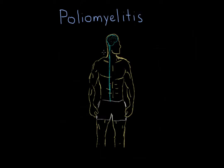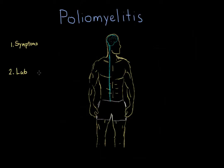Diagnosis of poliomyelitis is really based off of two things. First of all, you're going to want to think about what symptoms the patient is having. The symptoms should paint a clearer picture of polio and get you thinking about it. To confirm the diagnosis, the next step is to look at specific lab tests that will determine if there is actually an active polio infection in the body.